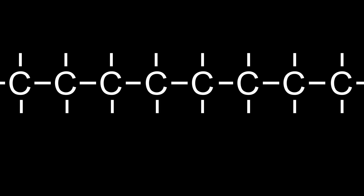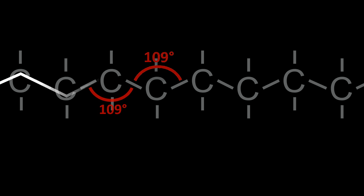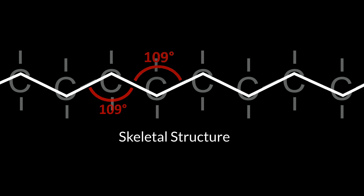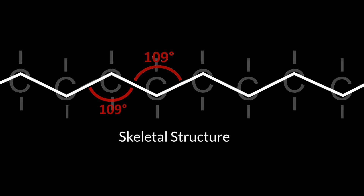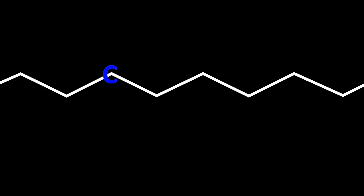As our molecules become more complex, it is extremely important to understand the shorthand called skeletal structures used to represent these molecules. Before we get to skeletal structures, however, we have to remember that carbon forms bonds at approximately 109 degrees. By showing that here, we can now see from where the zigzag line of the skeletal structure derives, which is simply a line that marks where all the carbons would be if shown. The zigzag line, as the carbon chain itself, would exist in the plane of the screen.